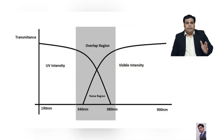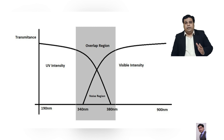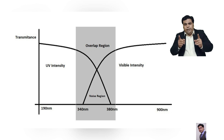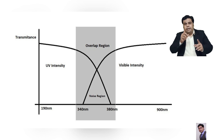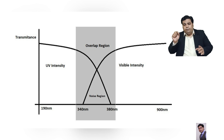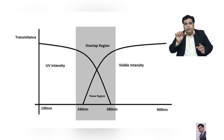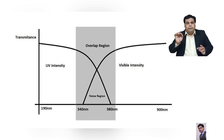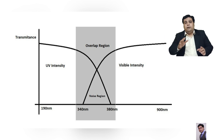The UV range is from 190 to 380 nm and the visible range is from 340 to 900 nm. There is an overlap region where UV and visible overlap — from 340 to 380 nanometers — and in this range there is a high chance of noise. If your lambda max falls in this range, you must optimize the changeover range in the software. If it is not optimized, you will get noise in this region and inaccurate results.